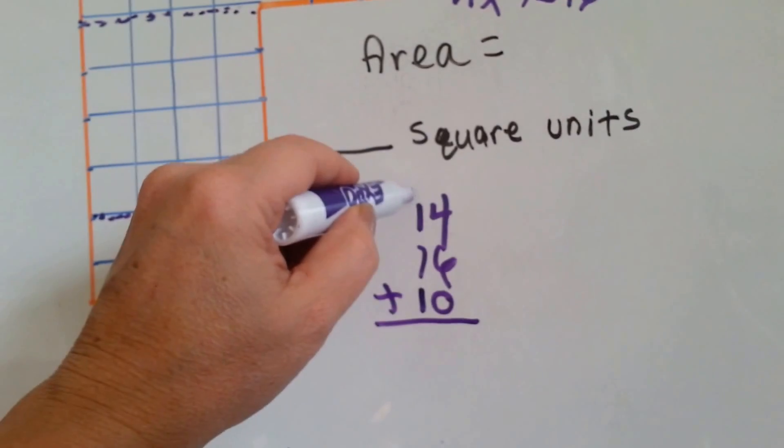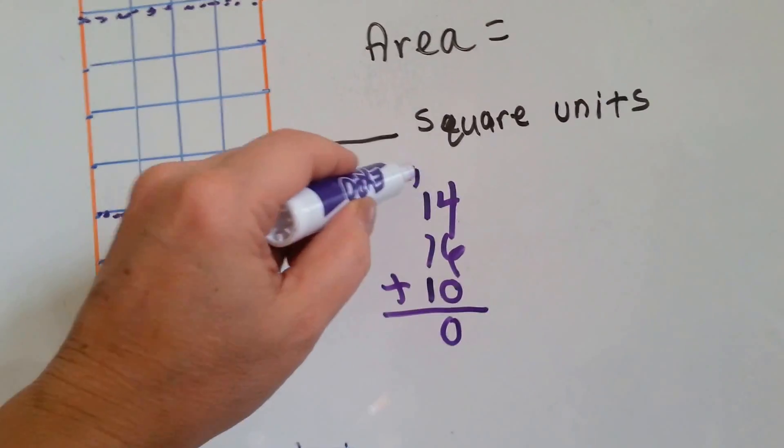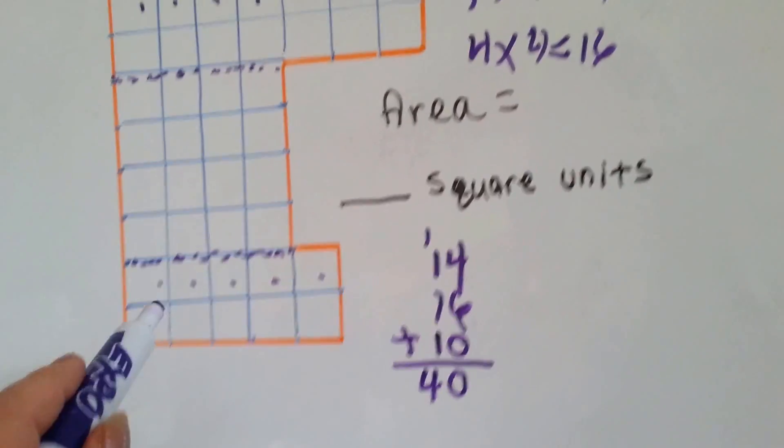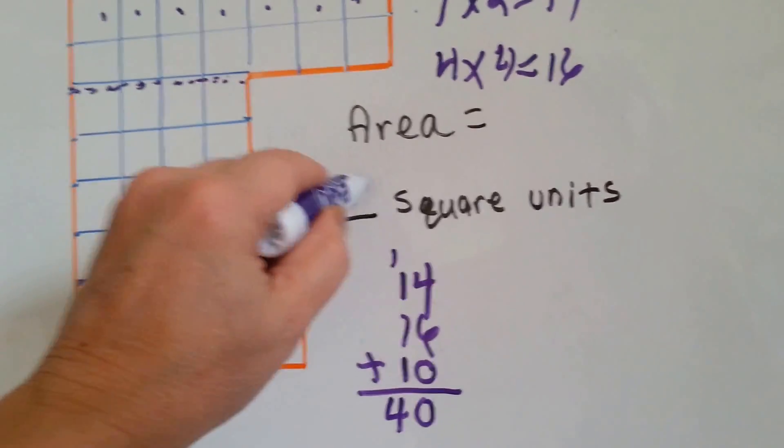4 and 6 is 10. We're going to carry the 1 and put the 0 down. 1, 2, 3, 4. There's 40 square units here.